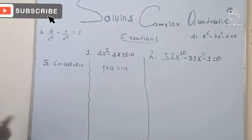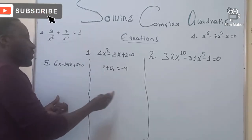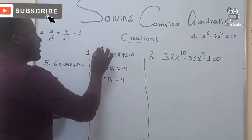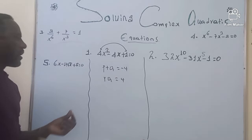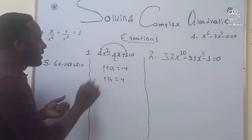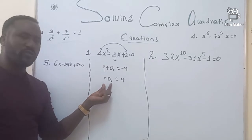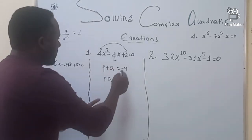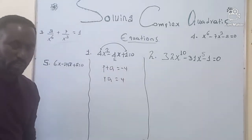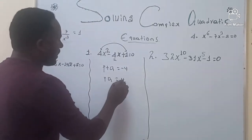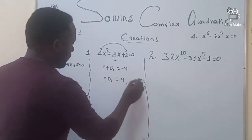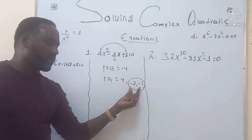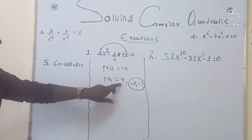We need to find two numbers P and Q whose sum is exactly the coefficient of the middle term — that is negative 4 — and whose product is 4. The numbers are negative 2 and negative 2. If you add negative 2 plus negative 2, that's negative 4. And if you find the product of negative 2 times negative 2, that's absolutely 4.